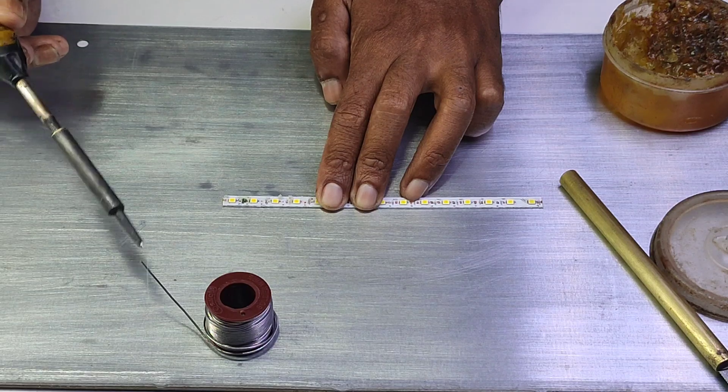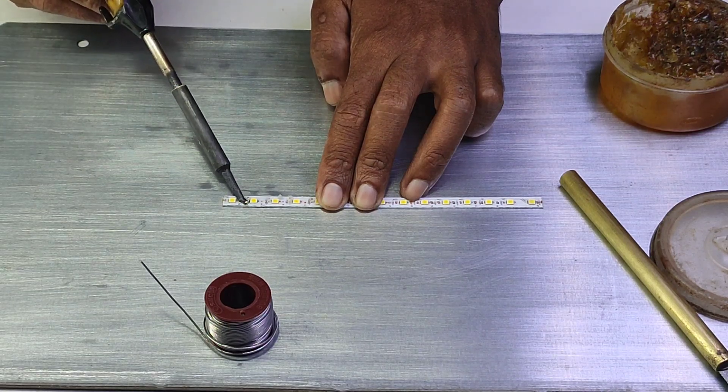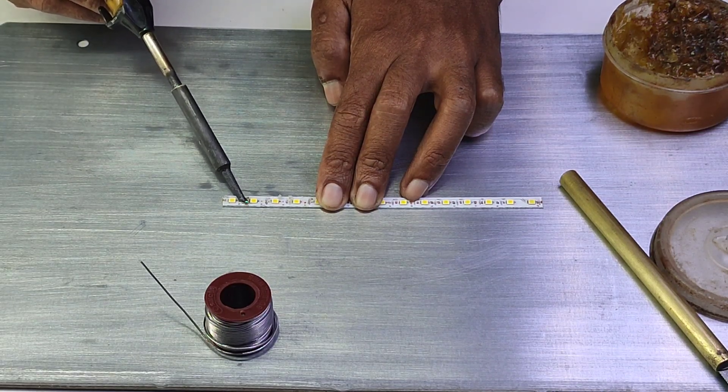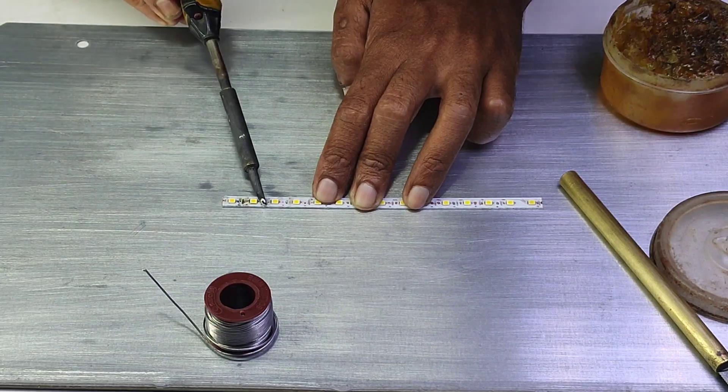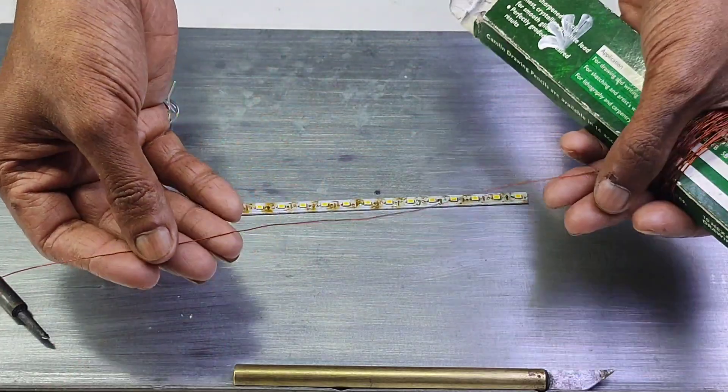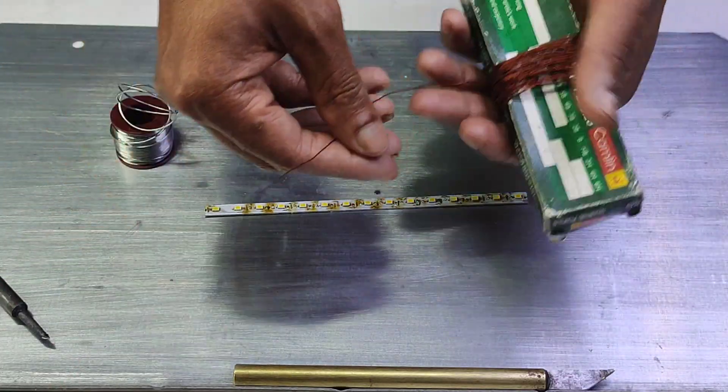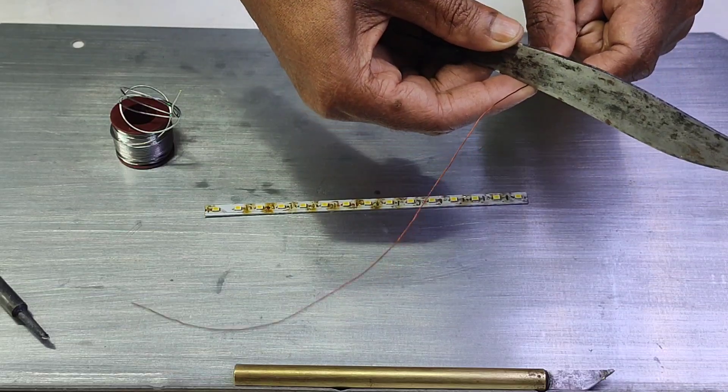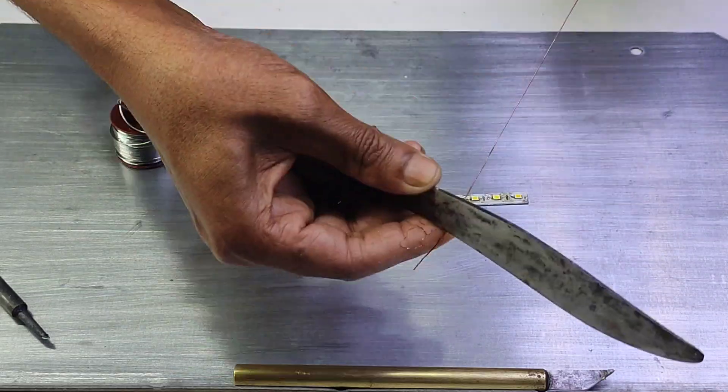Here I am applying solder to the copper traces. I'll use this laminated copper wire to connect all LED positives to one copper strip and all negatives to another.